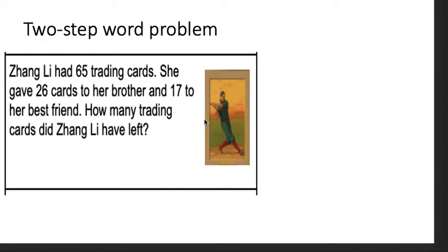This is a two-step word problem. If you don't know, it's Mr. Bonomi. We have a two-step word problem, and we've been doing a good job of breaking it down. We even created our own two-step word problem.